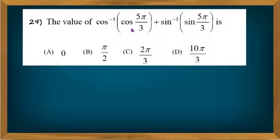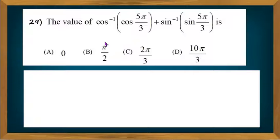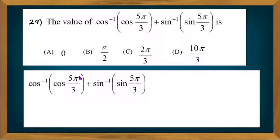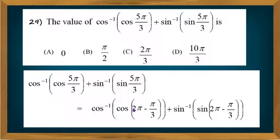Let us consider the given expression: cos⁻¹(cos(5π/3)) + sin⁻¹(sin(5π/3)). Now, 5π/3 can be rewritten as 2π − π/3. So the expression becomes cos⁻¹(cos(2π − π/3)) + sin⁻¹(sin(2π − π/3)).